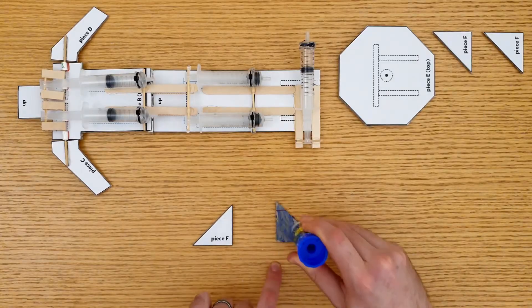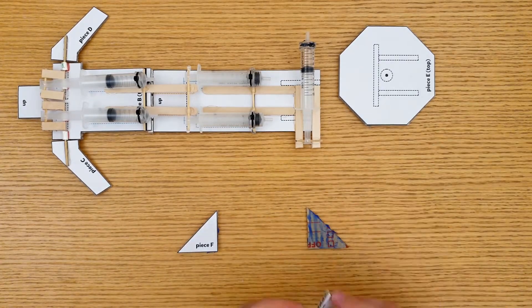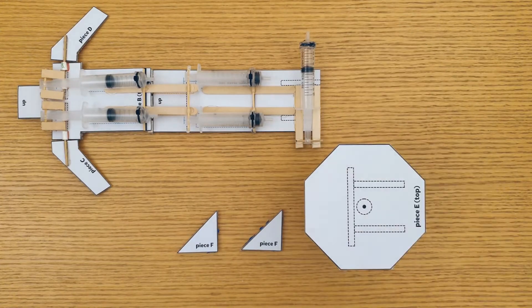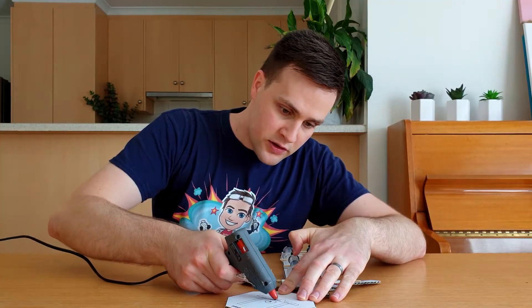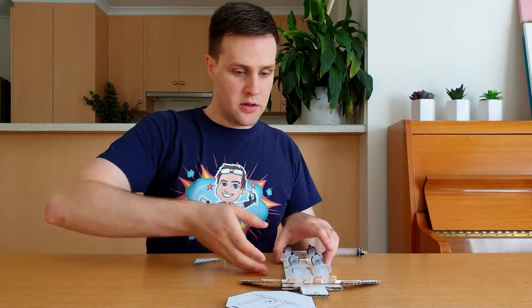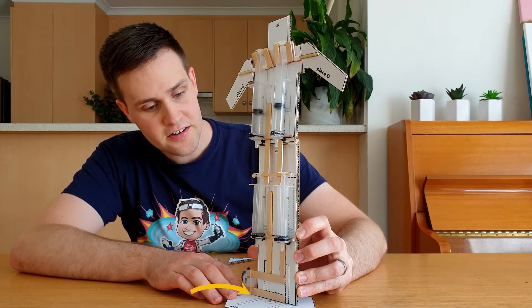Glue the cardboard sides of 2 of these triangles together, and do the same for the remaining 2 triangles. Drill or poke a 3mm hole through the middle of piece E. Then add some hot glue to this rectangle on piece E and attach the base of piece A, making sure all the components are on this side.